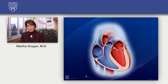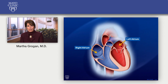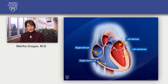When we open the heart up, you'll see that there are four chambers. There are two upper chambers that are collecting chambers, called the atria — the right atrium and the left atrium. And then the lower chambers are the ones that really do the pumping — they pump blood around your body, and those are called the right ventricle and the left ventricle.